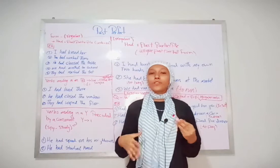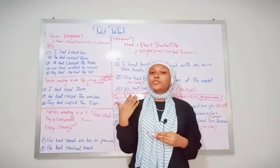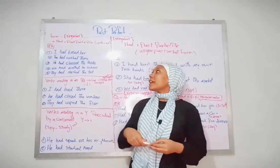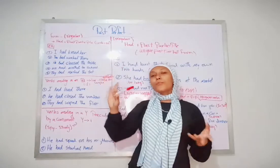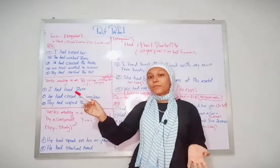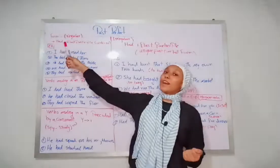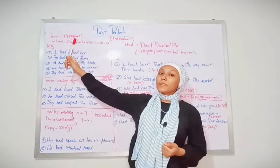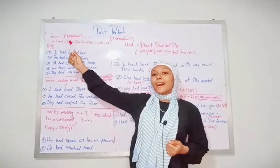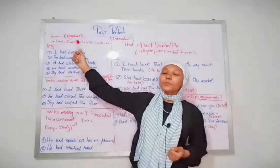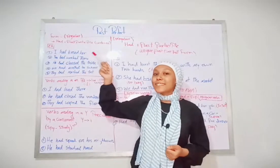First, it's good to know that in English there are regular and irregular verbs. Now, how we form the past perfect: we put the auxiliary verb 'to have' in the past, so it becomes 'had' plus the past participle, which is verb plus -ed.